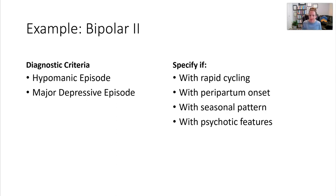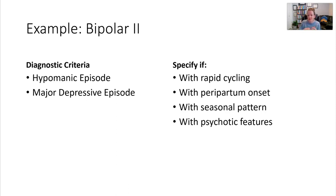Since you're probably not treating ferocious wild cats in your clinical practice, let's look at a real example — Bipolar 2. This is quite simplified; if you want to follow along, it starts on page 150 to 153 of the DSM-5TR. Simplified, you need a hypomanic episode along with a major depressive episode. Specifiers include things like rapid cycling or peripartum onset — 'peri' meaning around, like perimeter, and 'partum' meaning birth, so around birth — referring to when mood symptoms occur during pregnancy or within four weeks of delivery.